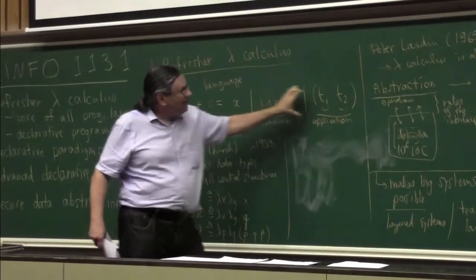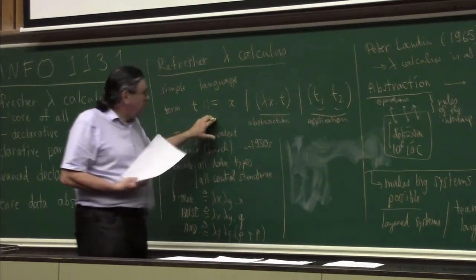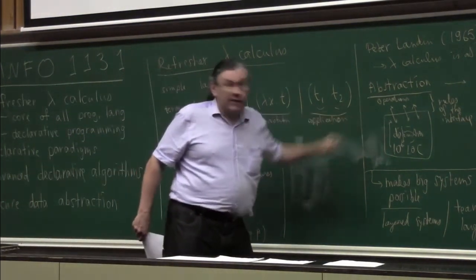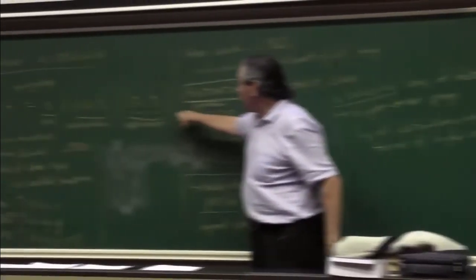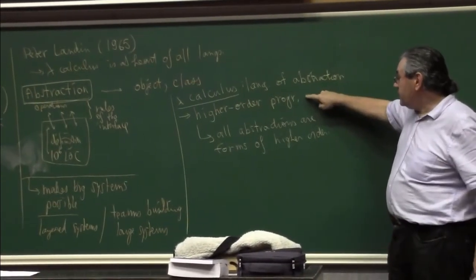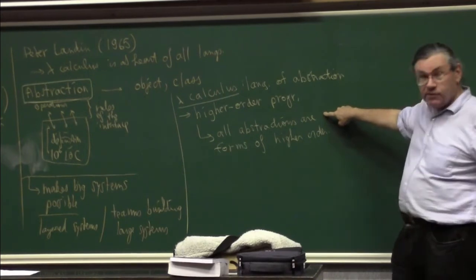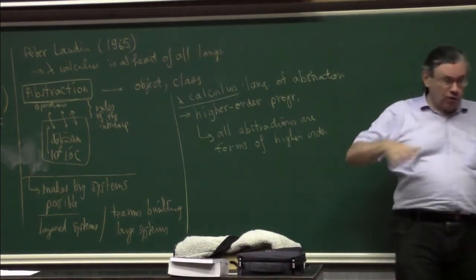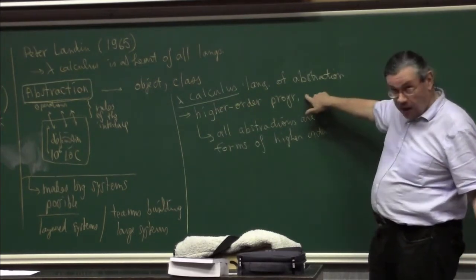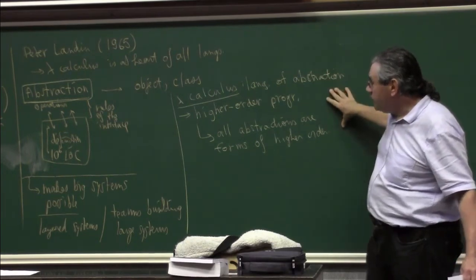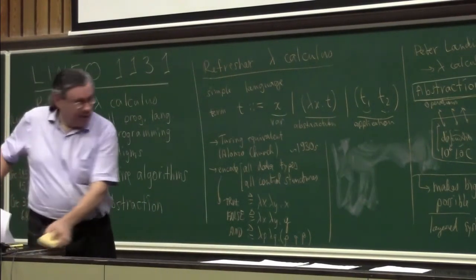So lambda calculus really is the language of abstraction, and abstraction is the key for all languages. Even assembly languages have abstraction — you can define macros or procedure calls. So all programming languages have this, and the lambda calculus is basically the language of abstraction. That's the first reason why lambda calculus is so important. Very complicated languages may have complexity, but if the language is well designed, lambda calculus — essentially higher-order programming — is at the core.